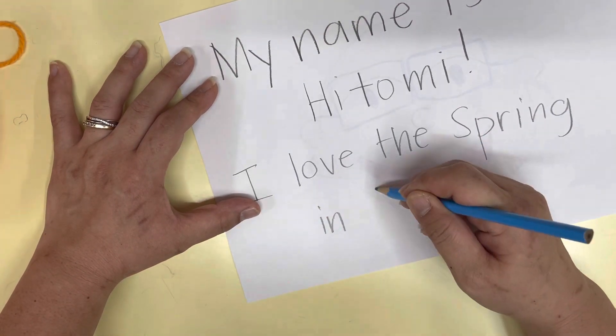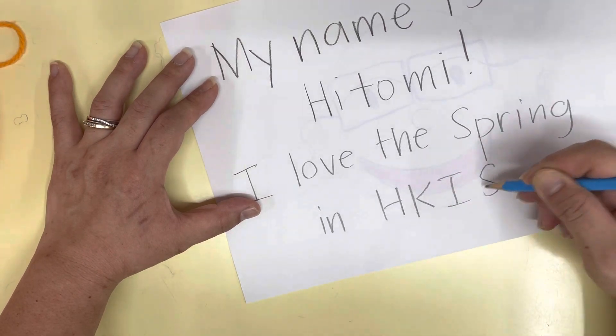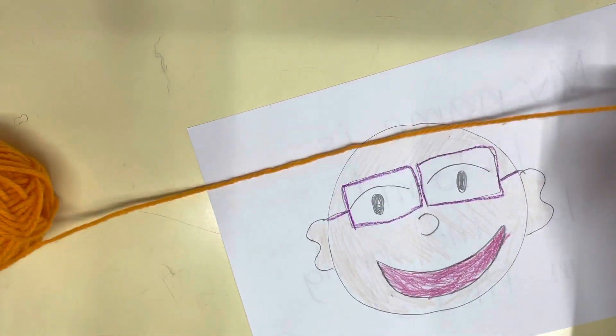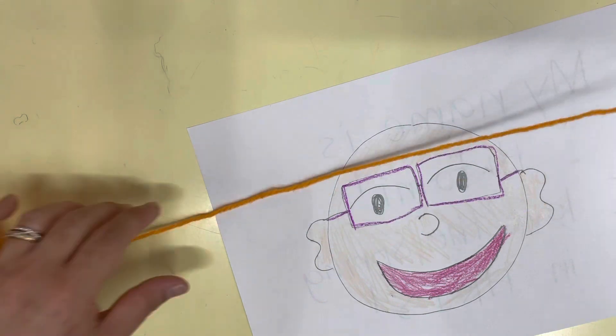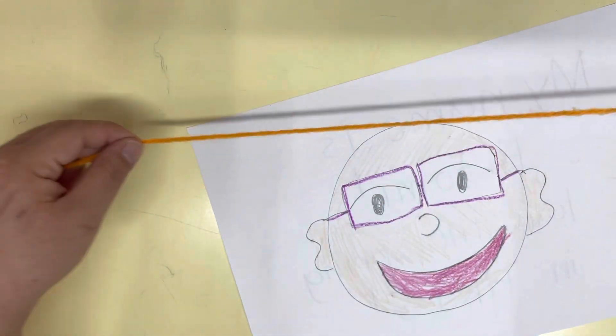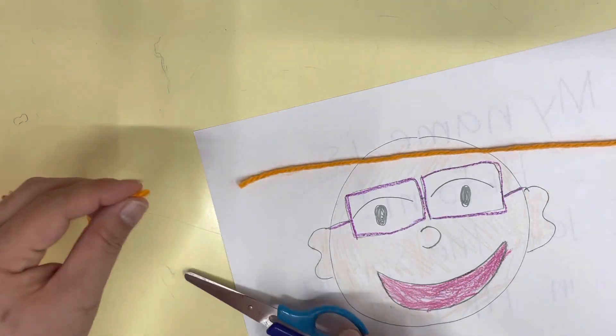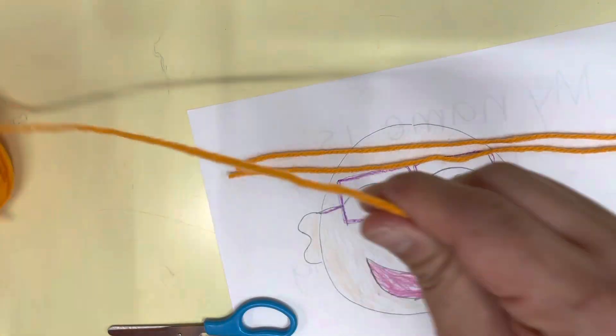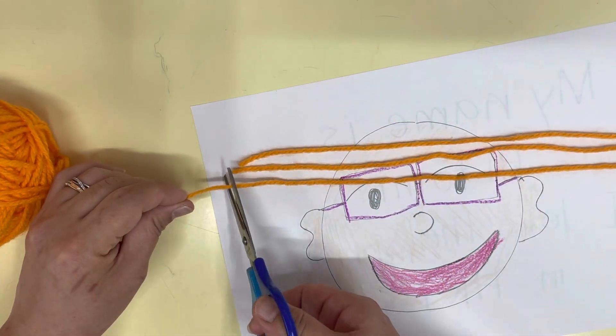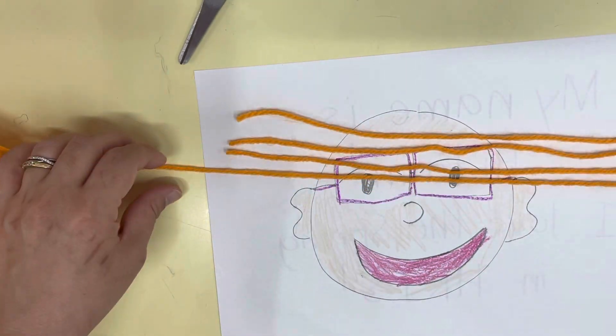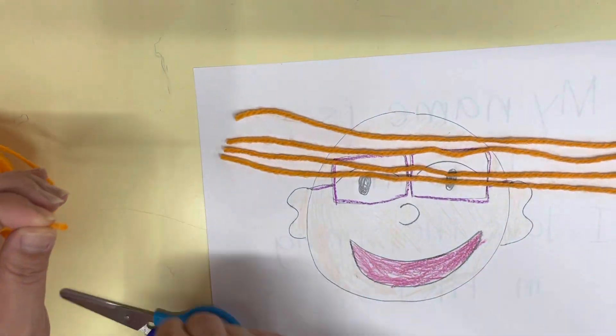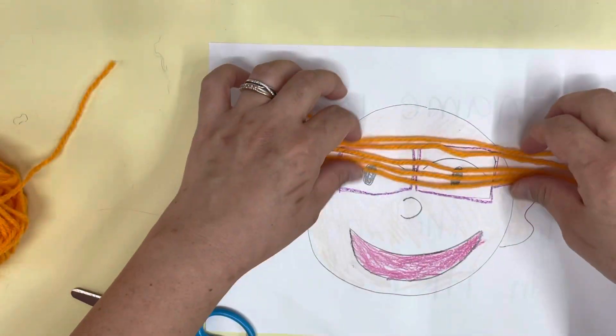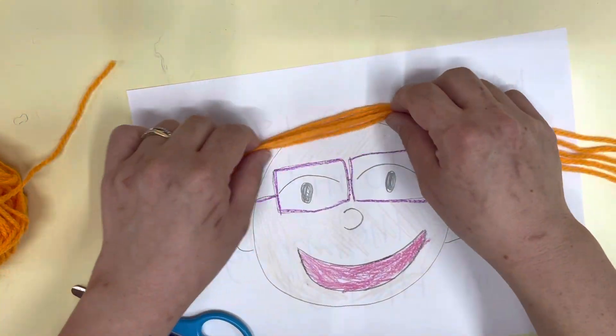And then now we can use our special item. So you're going to cut, let's see, maybe one, two, three, four, and let's do five. So there's five, and then I'm going to put it here at the top like this.